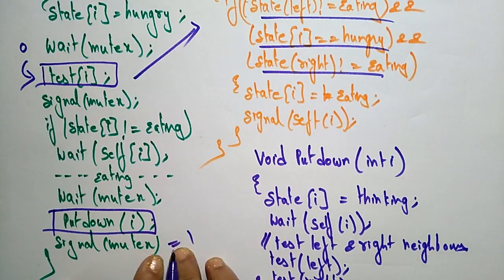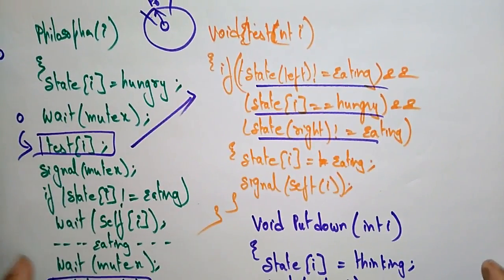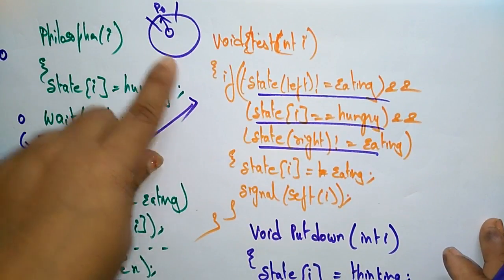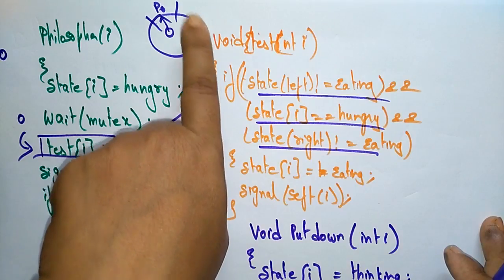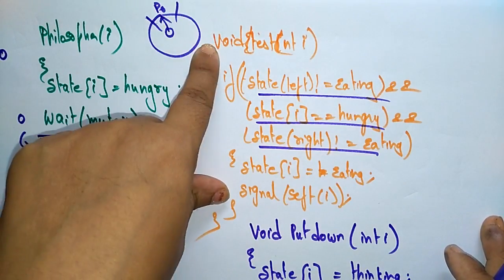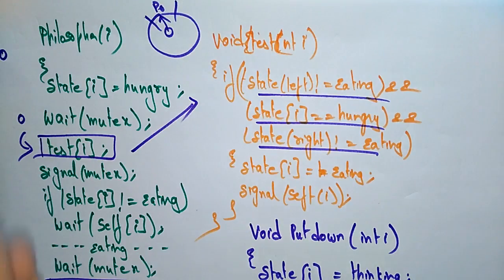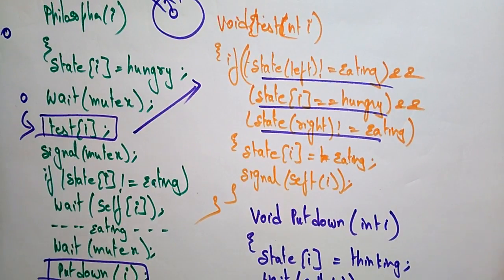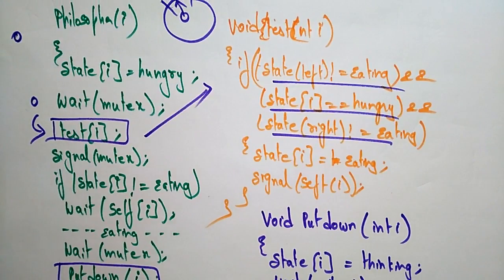By calling signal(mutex) I am incrementing the value so the next philosopher can continue with eating. Suppose one person is eating — another person may enter wait and wait until he releases the lock. They keep checking the conditions. Whenever a person is hungry and wants to eat, only then will he take the fork and eat. If an adjacent person is also hungry and eating, he has to wait until the other releases the lock. This is the solution for the dining philosopher problem. Thank you.